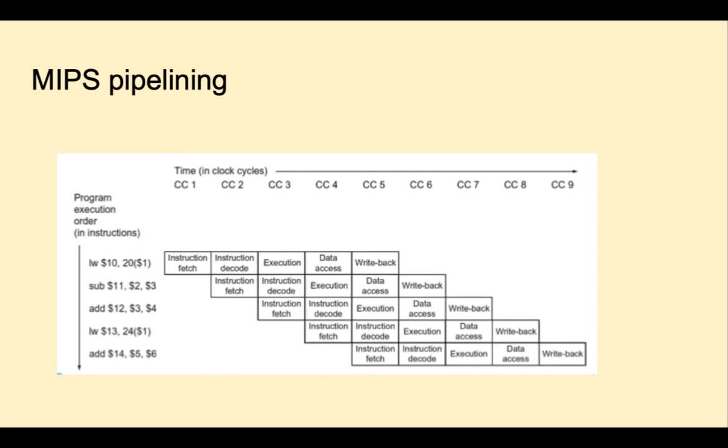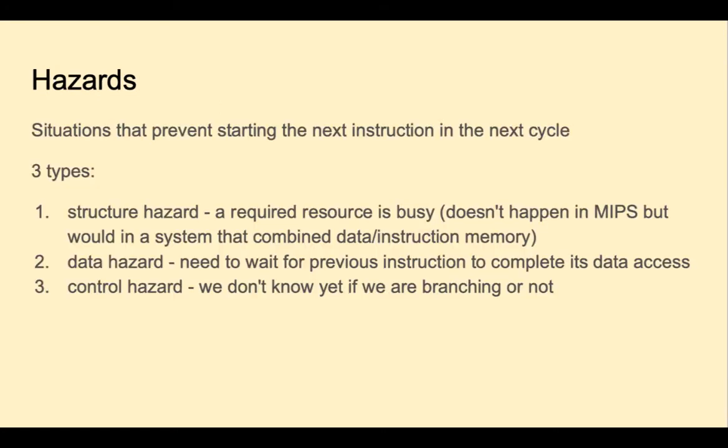What your crafty cat probably told you is that there could be dependencies between instructions that prevent an instruction from being executed. We call these dependencies hazards. A hazard is any situation that prevents starting the next instruction in the next clock cycle. There are three types of hazards. A structure hazard means that some required resource is busy. Structure hazards don't happen in MIPS. It would happen if we combined the data and instruction memories.